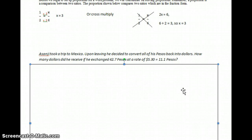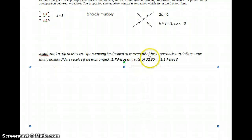Asanji took a trip to Mexico. Upon leaving, he decided to convert all of his pesos back into dollars. How many dollars did he receive if he exchanged 42.7 pesos at a rate of $5.30 equals 11.1 pesos?